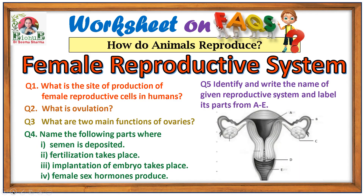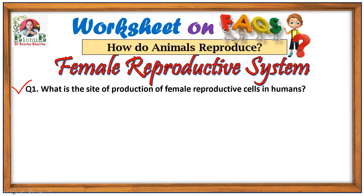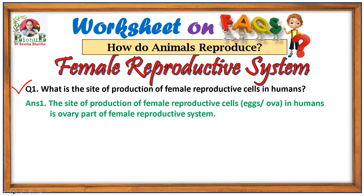There are five questions we are going to discuss in this worksheet. Question number one: what is the site of production of female reproductive cells in humans? The site of production of female reproductive cells, which are called eggs or ova, is the ovary — part of the female reproductive system.